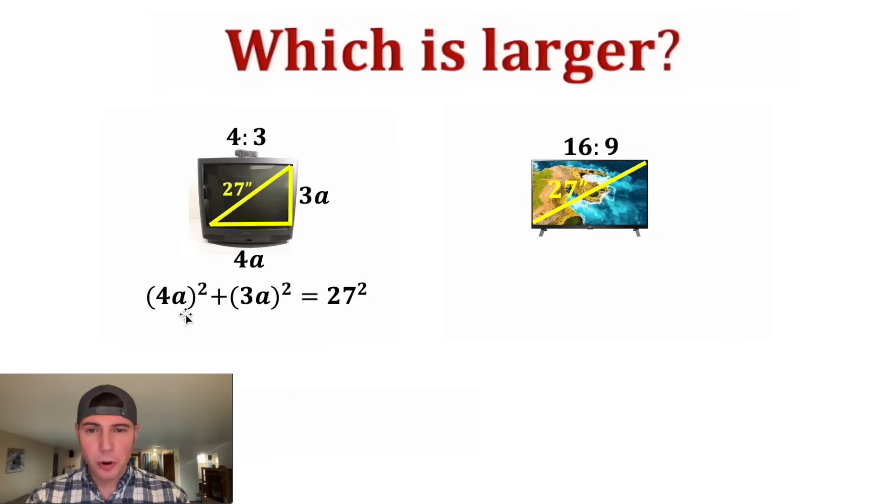This squared goes to both the 4 and the A, so it becomes 16A squared. And same thing here, this becomes 3 squared A squared, which is 9A squared. And then 27 squared is equal to 729. And then 16A squared plus 9A squared is 25A squared. We can divide both sides by 25, and we get A squared is equal to 729 over 25.